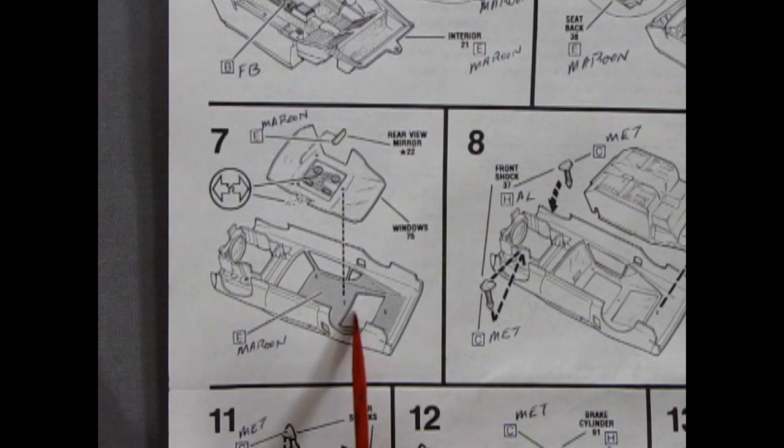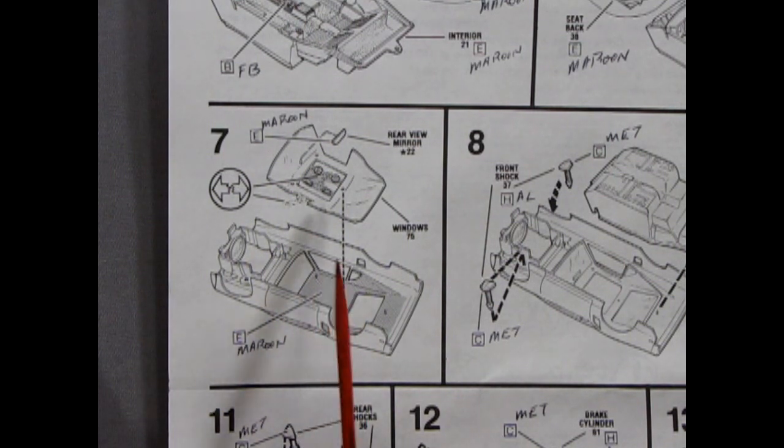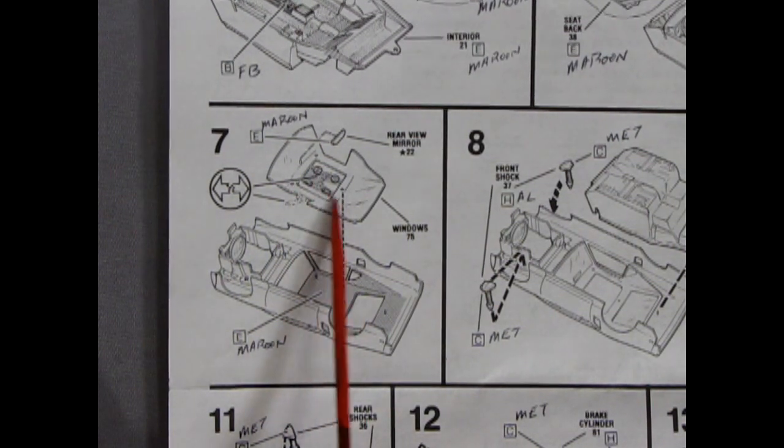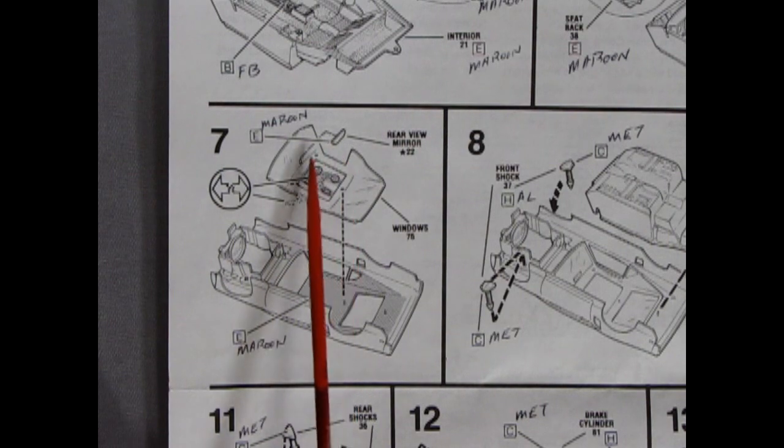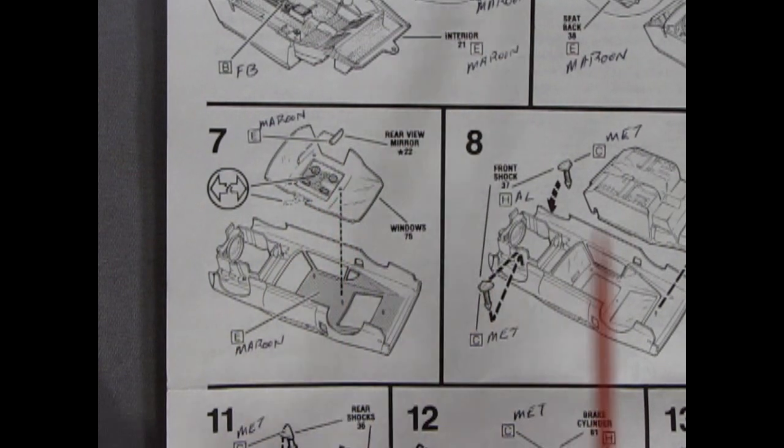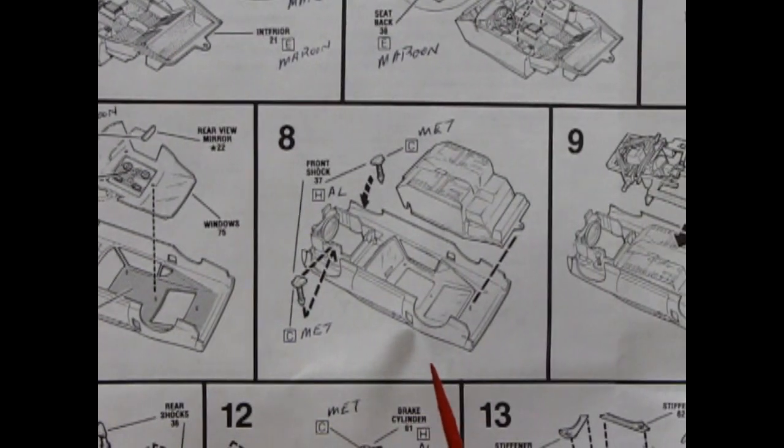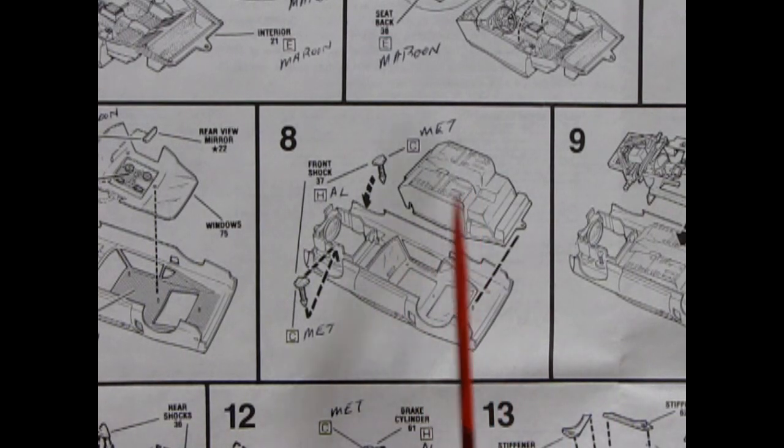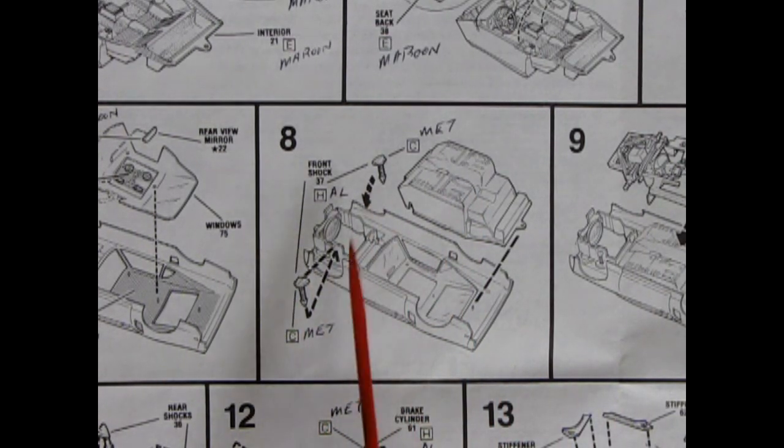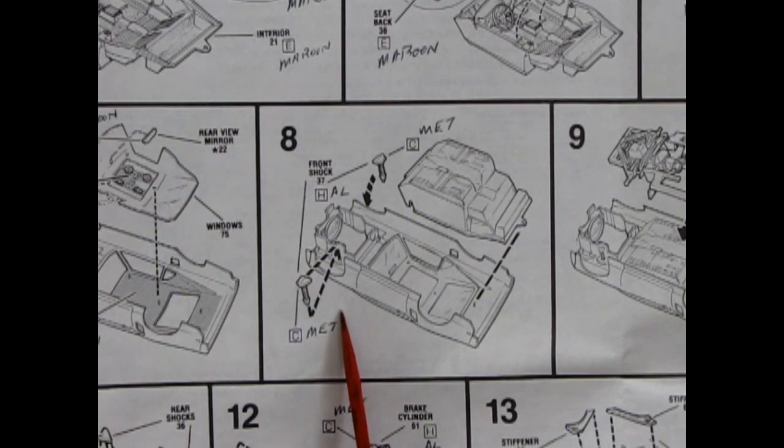Panel seven shows our body in here. It says to paint the interior headliner panel in maroon. We got our little lights in the glass, you cut those out. You glue your mirror on a little peg in the front windshield. And panel eight is showing our interior popping in into the body. And then our front shock absorbers being glued in the wheel wells.